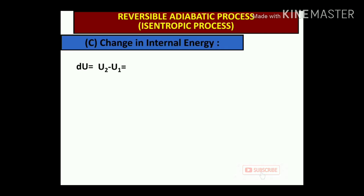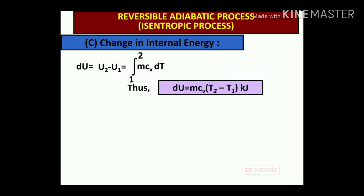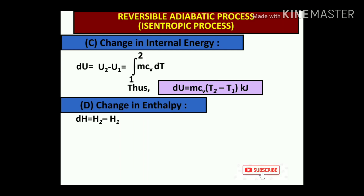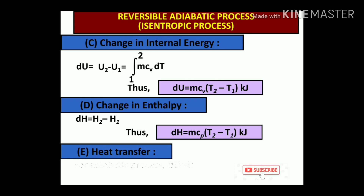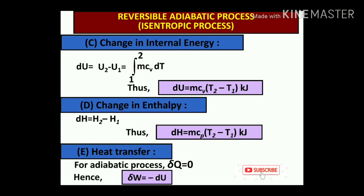Change in internal energy: dU = U2 − U1 = m·Cv·(T2 − T1) kJ. Change in enthalpy: dH = H2 − H1 = m·Cp·(T2 − T1) kJ. Heat transfer: For the adiabatic process we assume perfect insulation, so there is no heat transfer between system and surroundings — δQ = 0. Therefore, work done depends only on the internal energy: δW = −dU.